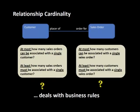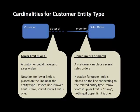We went on and looked at the actual notation. The lower limit is indicated on the side of the entity we are talking about — the lower limit for customer in this relationship is shown on the line closer to the customer. The line connecting two entities has a half closer to each entity, and the lower limit is shown on the line closer to the entity.